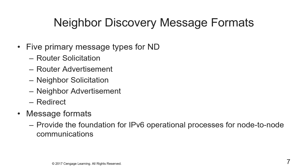There are five primary message types for neighbor discovery: router solicitation, router advertisement, neighbor solicitation, neighbor advertisement, and redirect. New options have also been added to the original neighbor discovery operations and are included in various RFCs. Packet format diagrams and packet decode examples are important to understand, as these message formats provide a foundation for IPv6 operational processes for node-to-node communication.